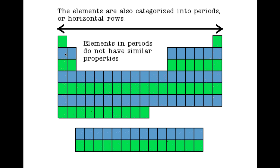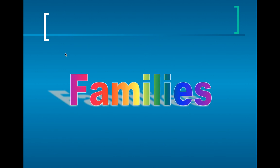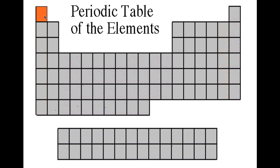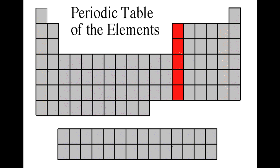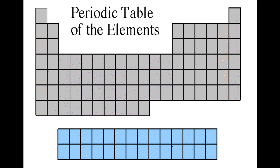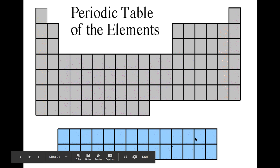We have the hydrogen family — hydrogen is its own little group. Then we have the alkali metals, the alkaline earth metals, the transition metals, the boron family, the carbon family, the nitrogen family, the oxygen family, the halogens, and the noble gases. Down at the bottom are the rare earth or inner transition metals — the actinides and lanthanides.